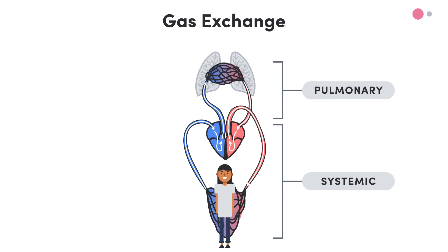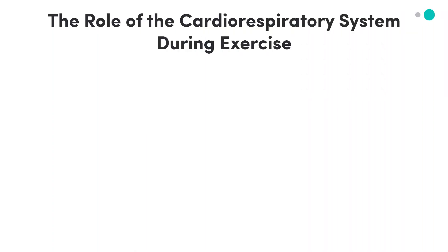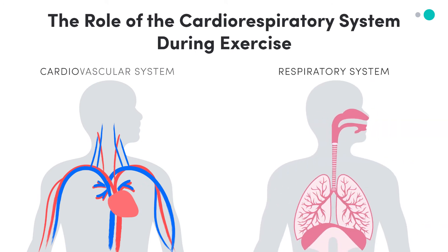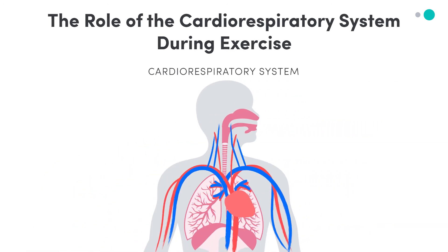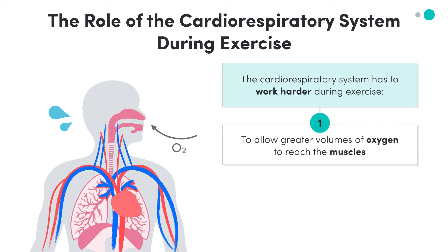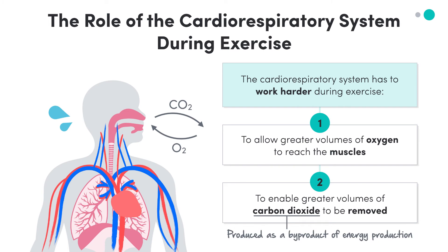Now let's take a look at how these processes work during exercise to allow for movement and performance. As we can see through gas exchange, the cardiovascular system and the respiratory system are linked, forming what we call our cardiorespiratory system. Our cardiorespiratory system has to work harder during exercise than at rest for two main reasons: to allow greater volumes of oxygen to reach the muscles, and to enable greater volumes of carbon dioxide — which is produced as a byproduct of energy production — to be removed.